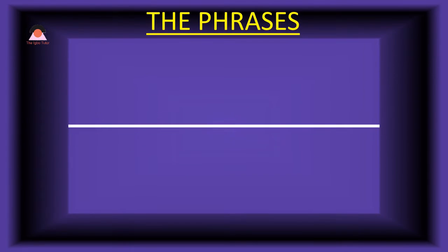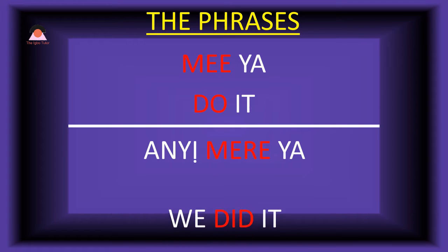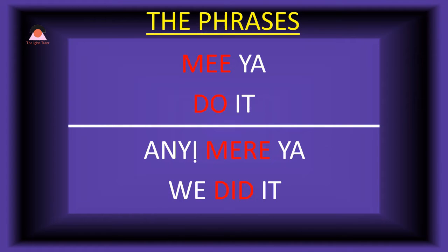How do we use them in phrases and sentences? In present tense we have 'meya' which means 'do it.' And in past tense we have 'ani meireya' which means 'we did it.' This is what we bring to you today: 55 special Igbo verbs in their present and past tense form. It comes with phrases that will help you understand how they are used. If you are serious about learning how to speak and write Igbo language in the shortest possible time, then you have to watch this video till the very end. Let's move straight to the class.